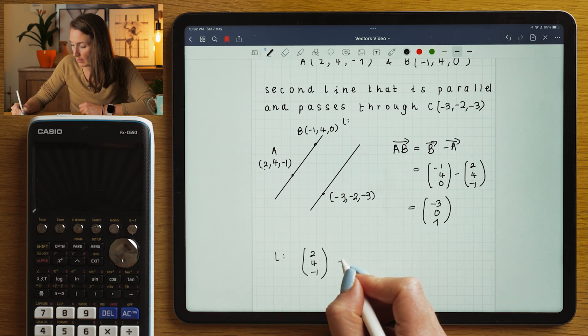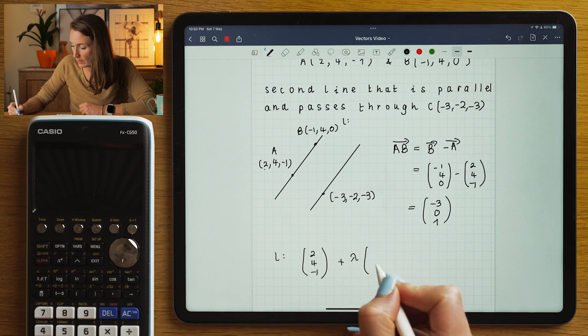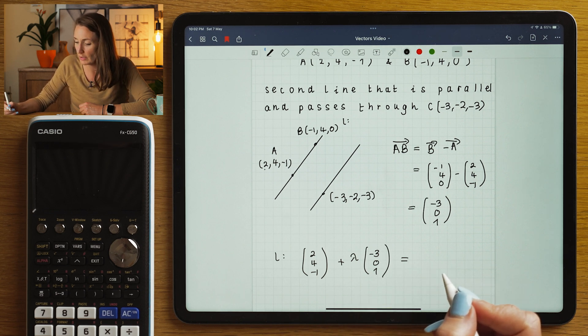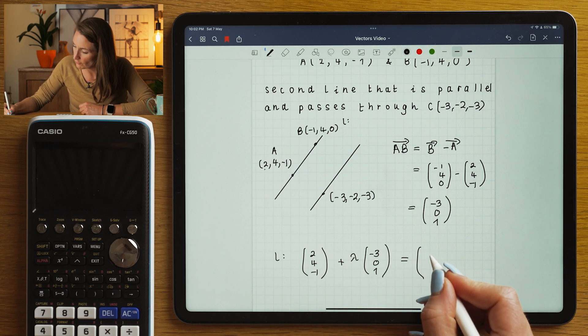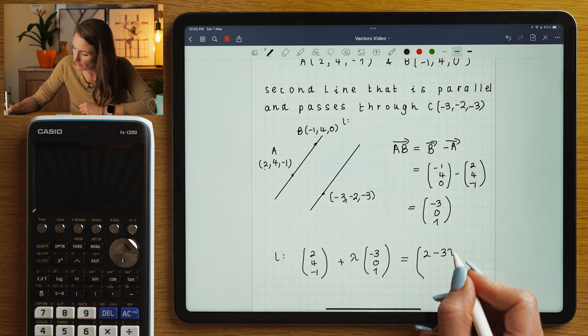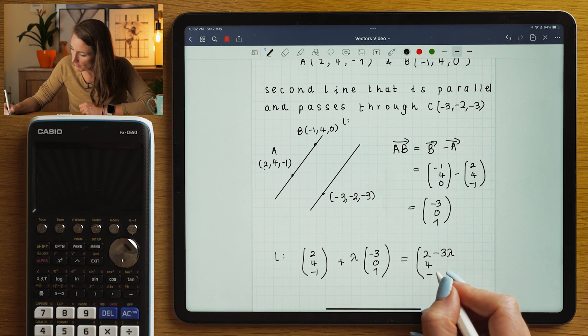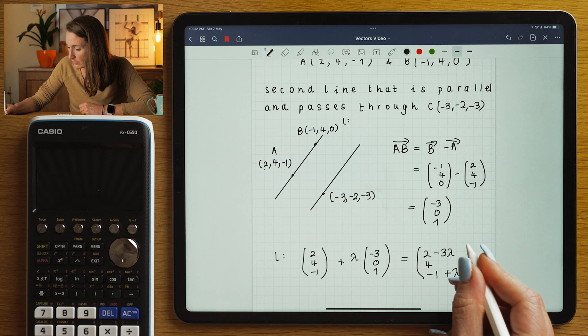is going to be, I'm going to use A as my point on the line, (2,4,-1), plus lambda times (-3,0,1). We can actually say that any point on that line is in the form (2-3λ, 4, -1+λ).